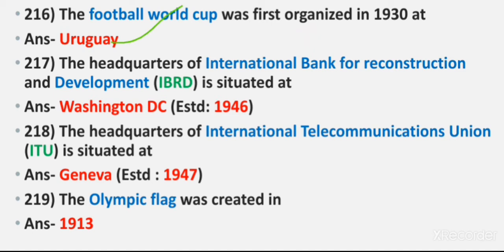Question 216: The Football World Cup was first organized in 1930. Answer: Uruguay. Question 217: The headquarters of the International Bank for Reconstruction and Development is situated at. Answer: Washington D.C., established in 1946. Question 218: The headquarters of the International Telecommunication Union is situated at. Answer: Geneva, established in 1947.